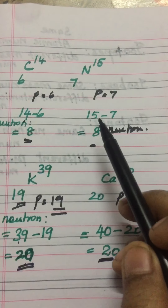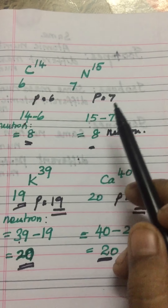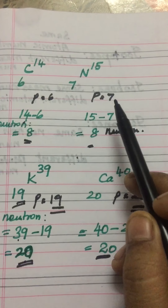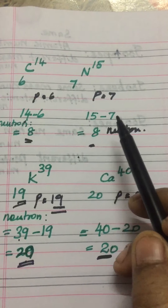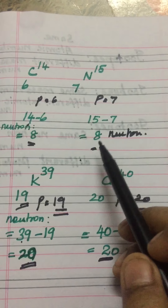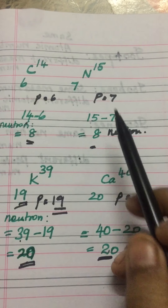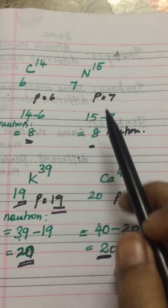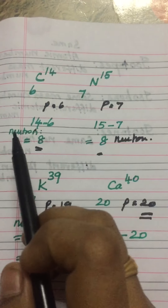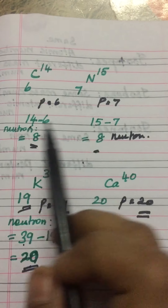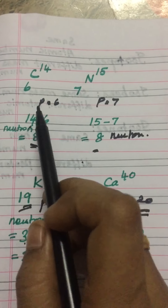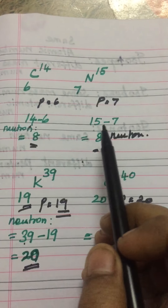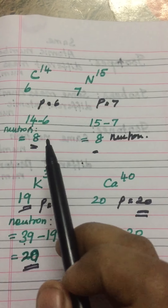For nitrogen, the mass number is 15 and proton value is 7. So 15 minus 7 is 8. The neutron value for nitrogen is also 8. So two different elements have the same neutron value but different proton values — this is called isotones.